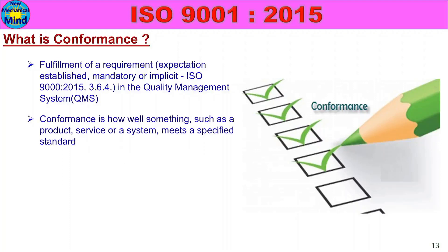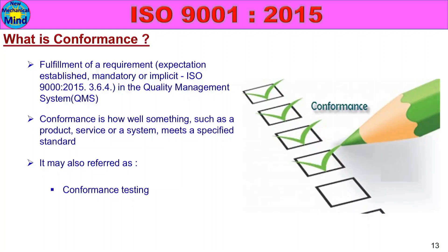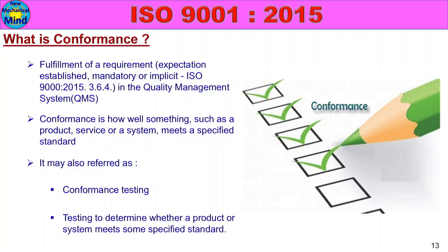Conformance describes how well something — such as a product, service, or system — meets a specified standard. When a product, service, or system meets the required standard, that is conformance. Conformance testing is done to determine whether a product or system meets the specified standard.